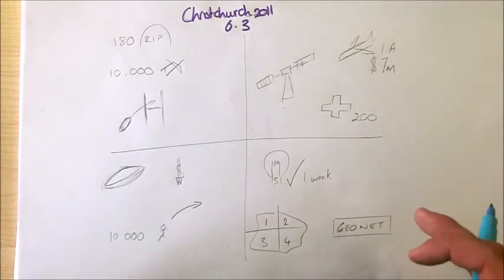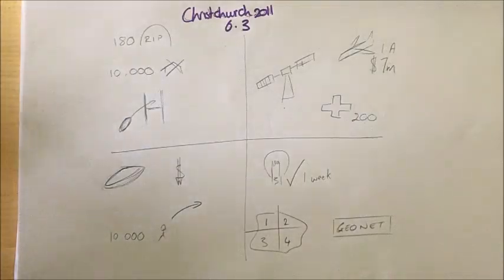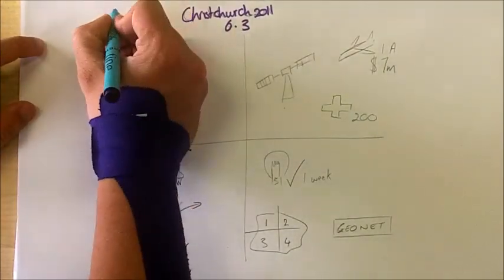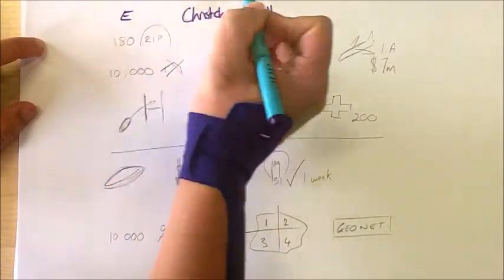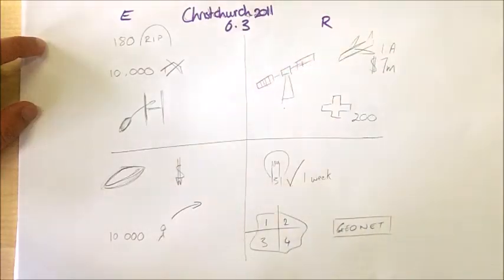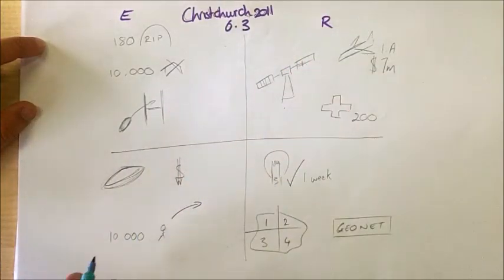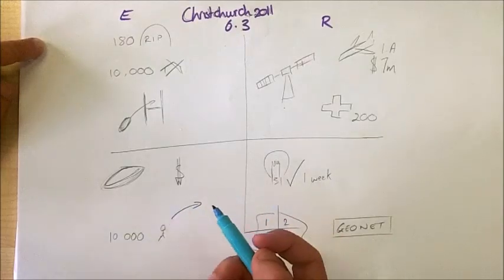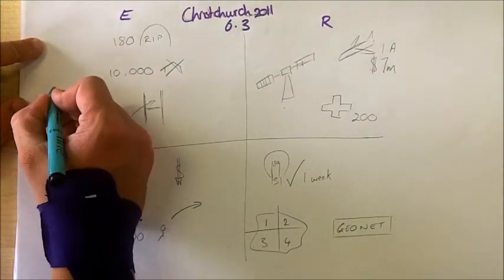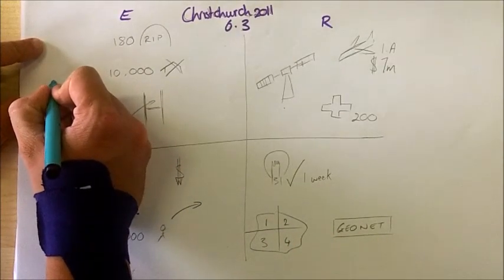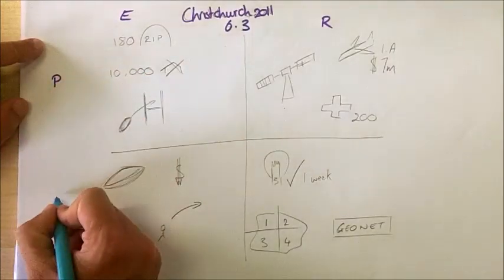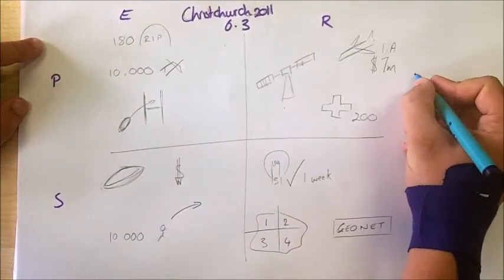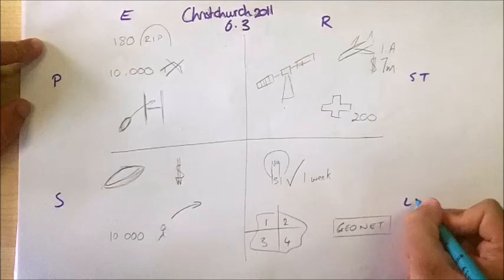For both of those, we need to look at the effects and responses to the earthquake. So we're going to start off with the effects on this side, and then the responses over on this side. What we can also do is we can start categorizing those down into short-term or long-term or primary and secondary responses and impacts.